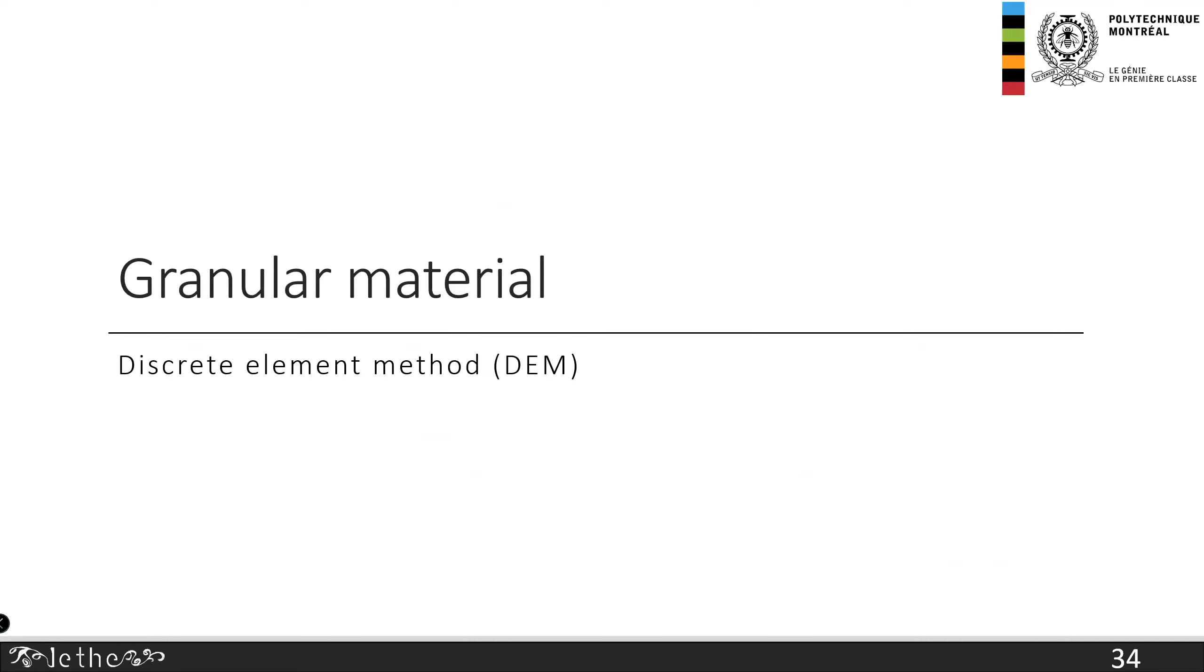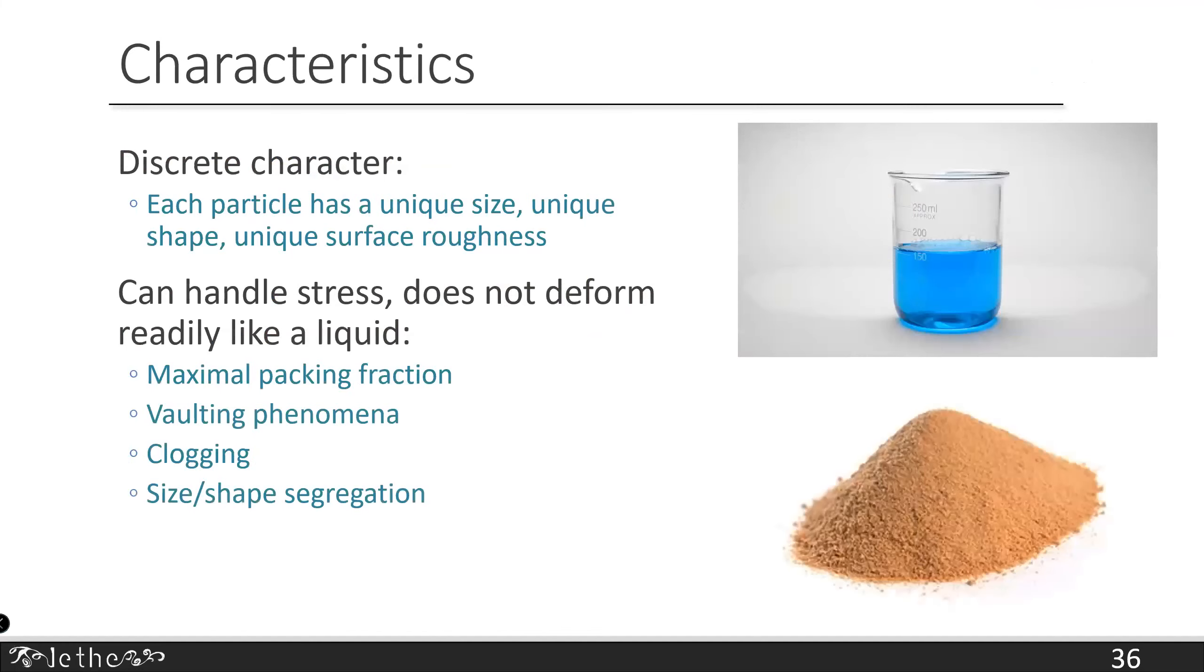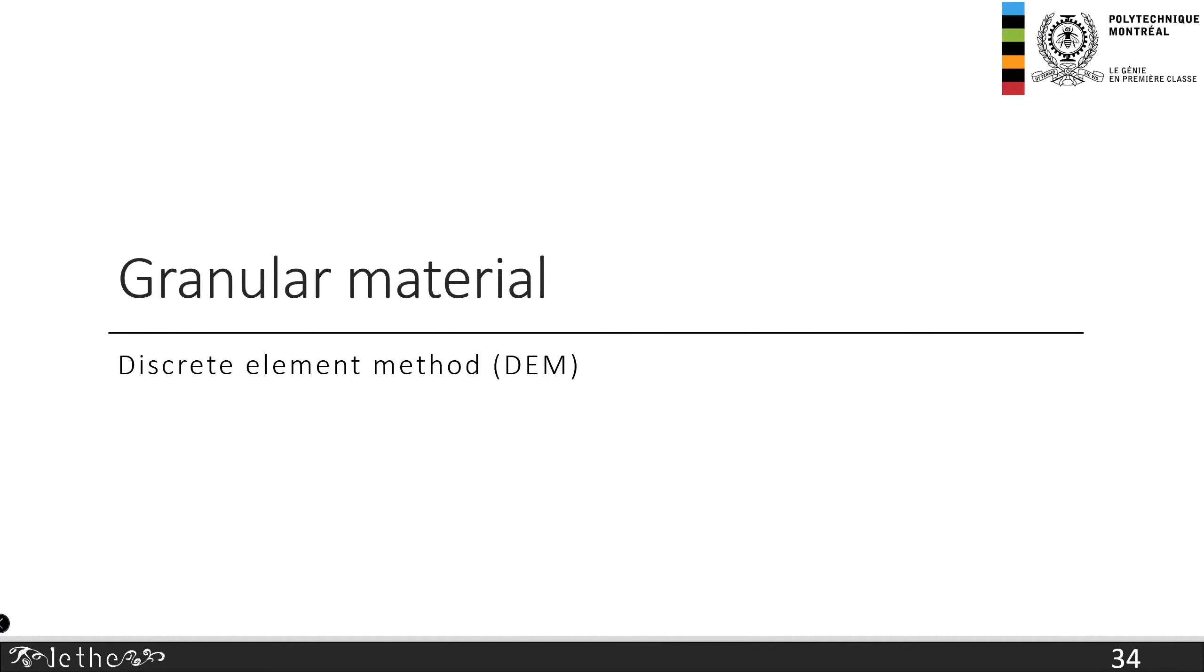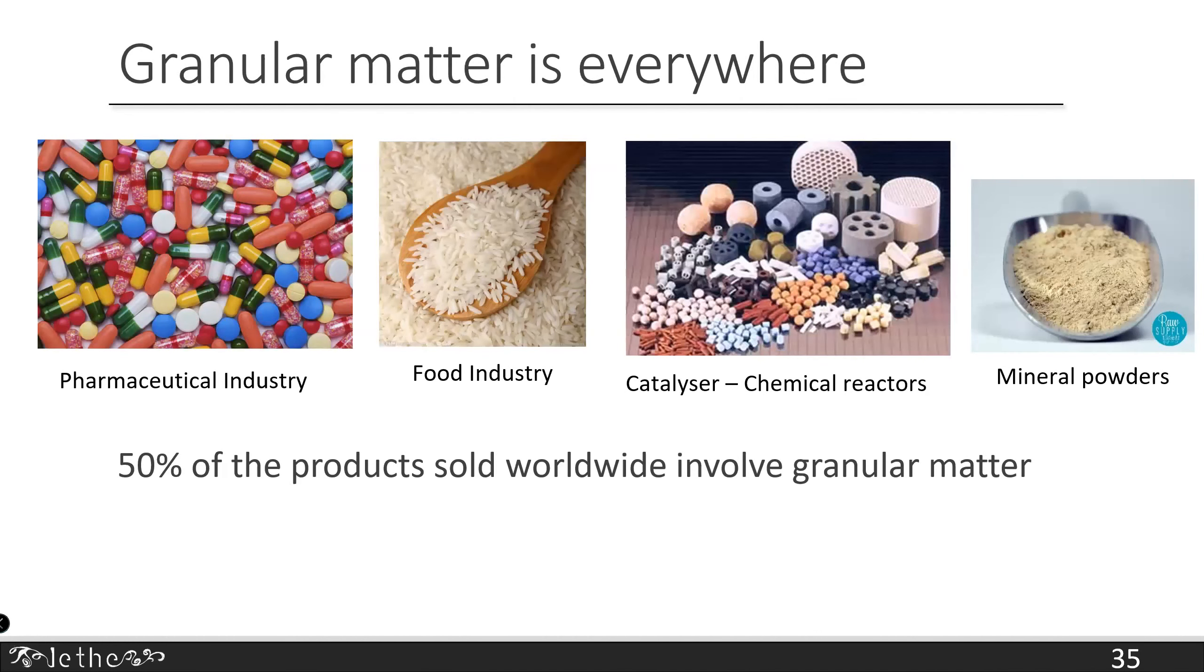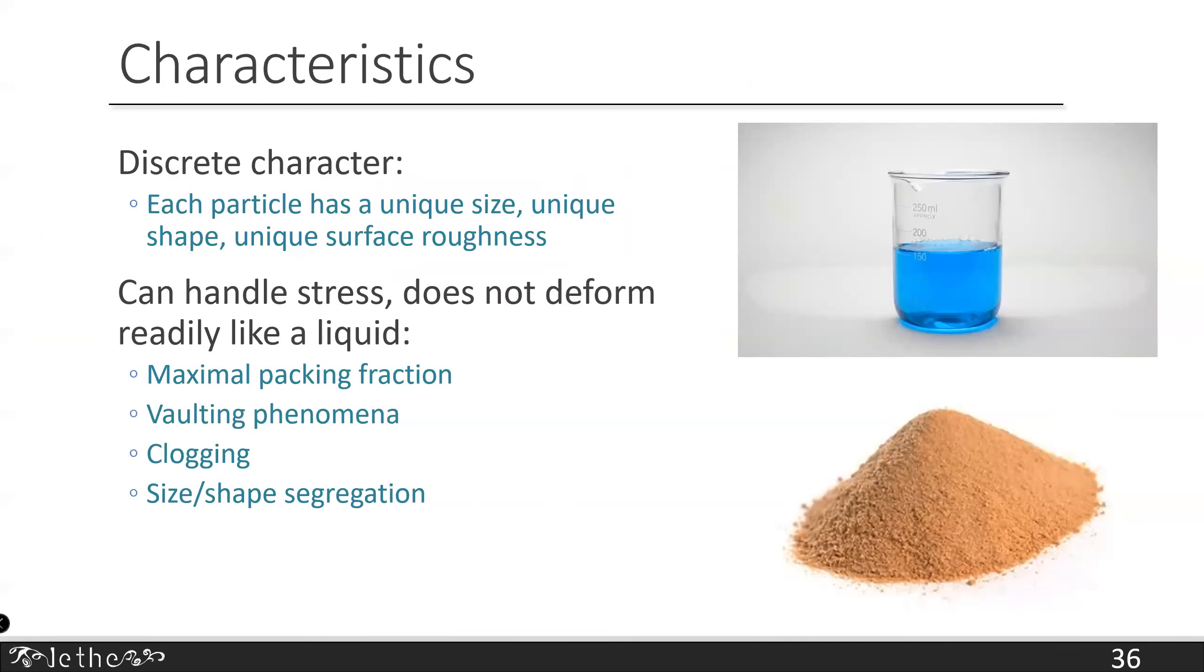On to another very different topic: the simulation of granular material. Granular matter is everywhere - in the chemical industry, pharmaceutical, food, catalyst and mineral powder. About 50% of the products sold worldwide involves granular matter at one point or another. Granular matter is difficult. It's a complicated type of matter because it has a discrete character. Each particle has a unique size, shape, and surface roughness. It has very weird rheology. It can handle stress and does not deform like a liquid. There's a maximal packing fraction. You can have vaulting, clogging, or segregation.